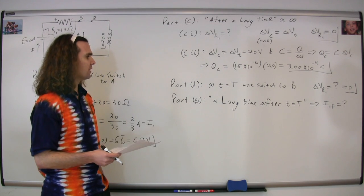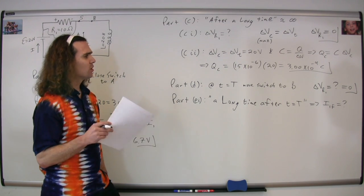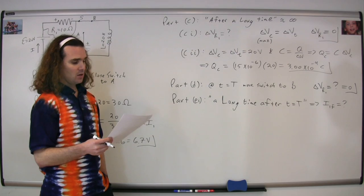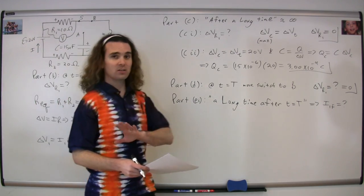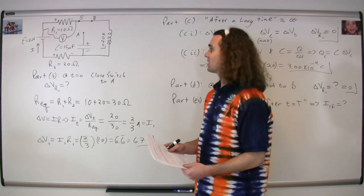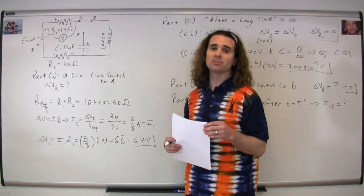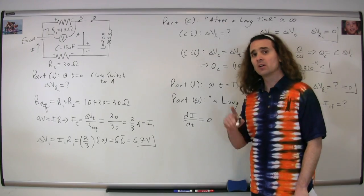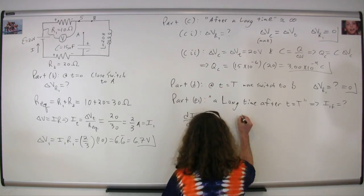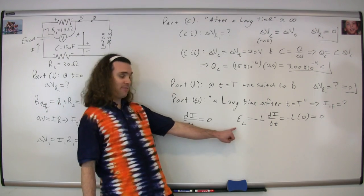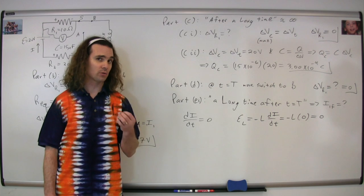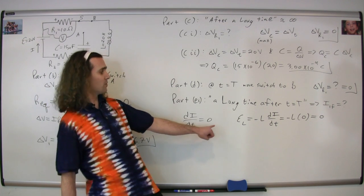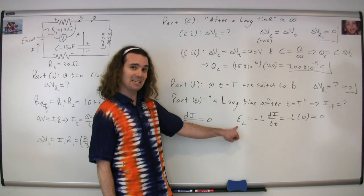Part E(i): a long time after T equals capital T, what is the current through resistor 1? After a long time, the inductor is done resisting a change in current — the current has changed as much as it can, so dI/dt equals zero. Since the current is not changing with respect to time, the EMF across the inductor equals negative L times dI/dt, which equals zero. Therefore, the potential difference across the inductor is equal to zero.